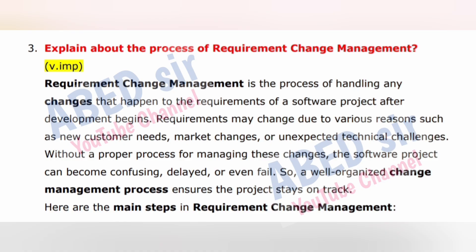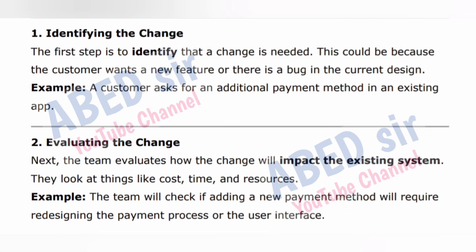Next important long question: Explain the process of Requirement Change Management. Requirement Change Management is the process of handling any changes that happen to the requirements of a software project after development begins. Requirements may change due to various reasons such as new customer needs, market changes, or unexpected technical challenges. Without a proper process for managing these changes, the software project can become confusing, delayed, or even fail. Step 1 — Identifying the Change: the first step is to identify that a change is needed. This could be because the customer wants a new feature or there is a bug in the current design. Example: a customer asks for an additional payment method in an existing app.